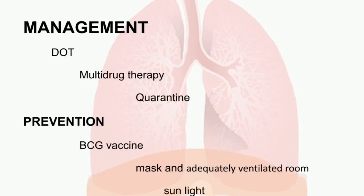We need to ensure adequate ventilation. Sunlight is very important — sunlight provides Vitamin D, and Vitamin D helps increase immunity. Using sunlight and Vitamin D together helps improve the body's immune response against TB.